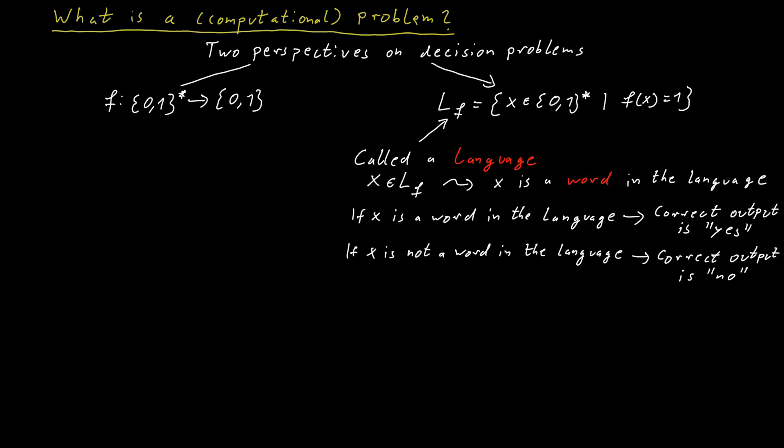So the decision problem here is to decide whether a given input, which is a bit string now, is in our language. When we talk about decision problems, we switch back and forth between function representations and set representations. But I cannot emphasize enough that there is no conceptual difference between those two things. A language is exactly the same thing as a decision problem, it's just a different representation.